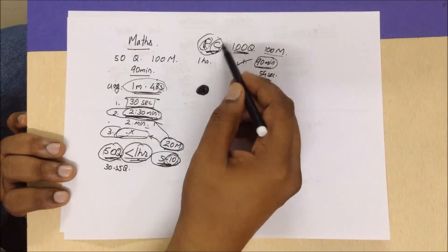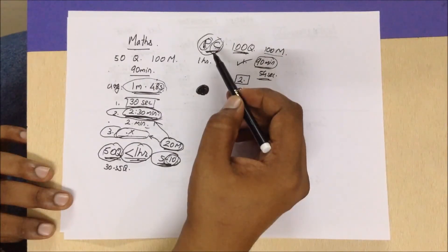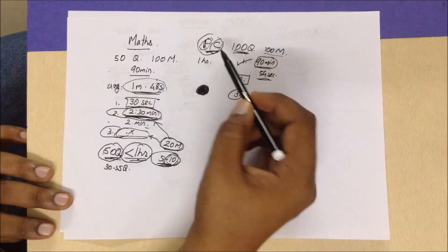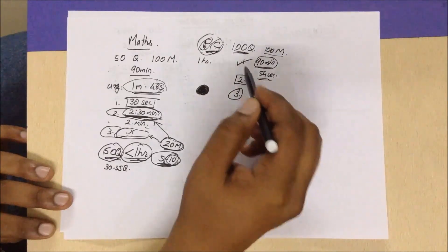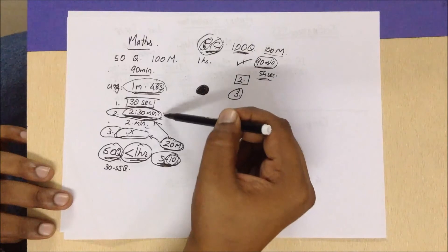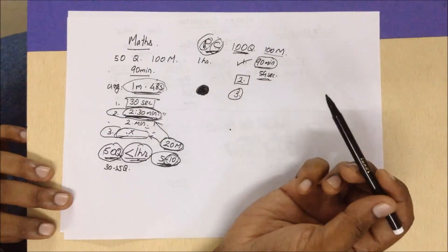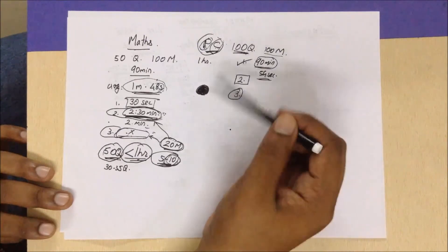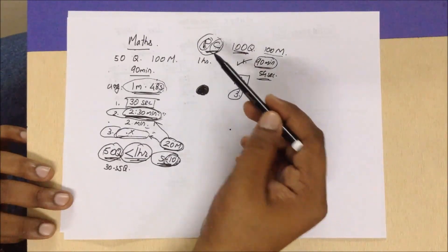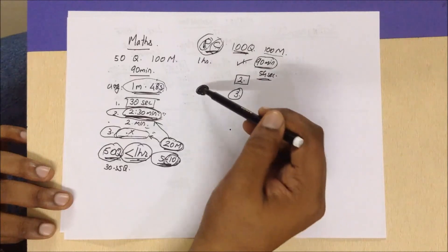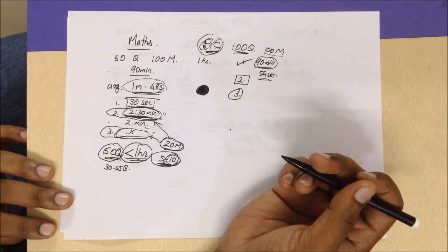Depending on your strengths, allot time accordingly — if physics is stronger than chemistry, give more time to physics. Spend about one hour scanning the 100 questions: approximately 40 minutes on physics and 20 to 25 minutes on chemistry. In the remaining half hour, spend 20 minutes on unsolved questions and the last 5 to 10 minutes properly marking all the bubbles.